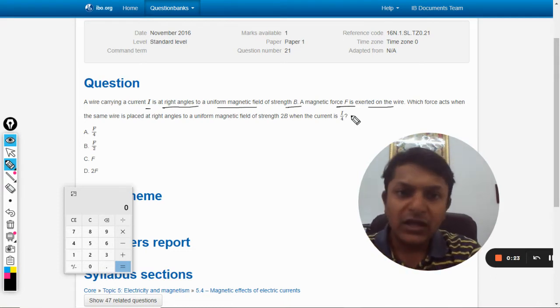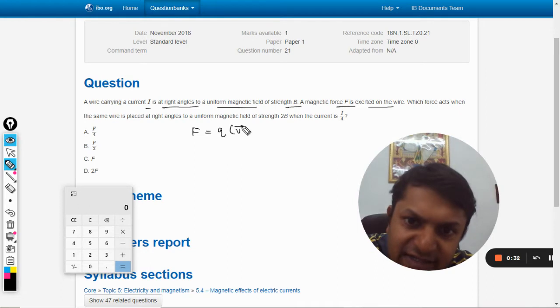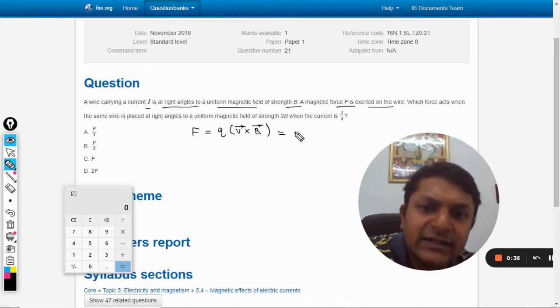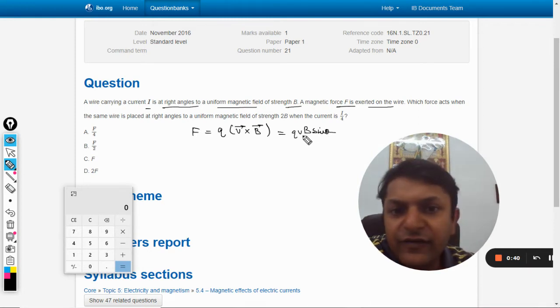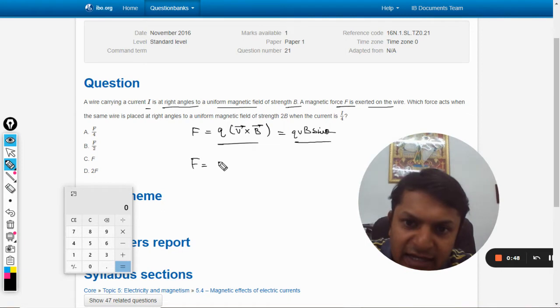We have done two formulas in our book. The first formula is the force that is experienced by a charged particle, and the scalar form of this was qvb sin theta. And there was another formula: i into l cross b.